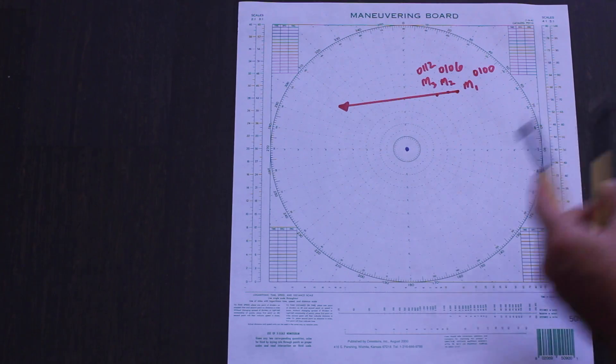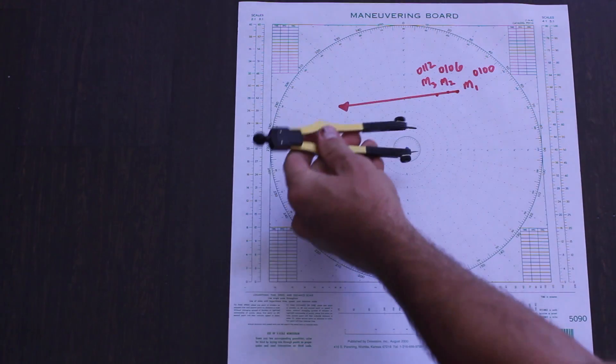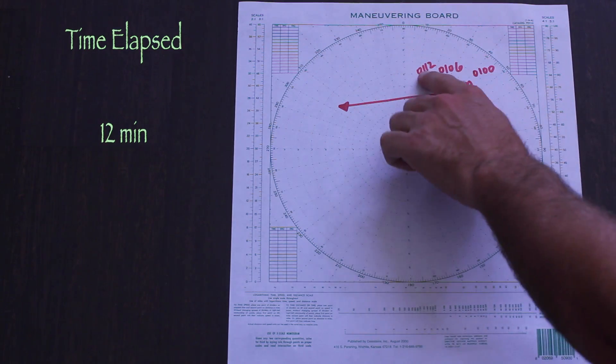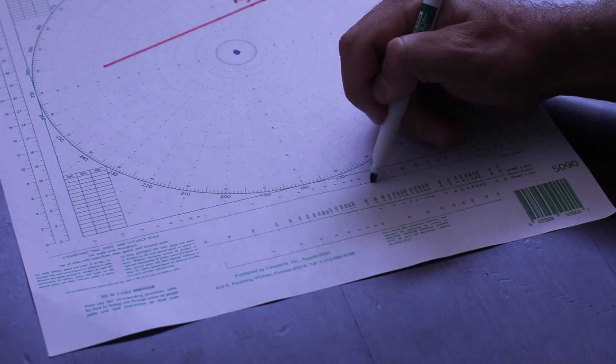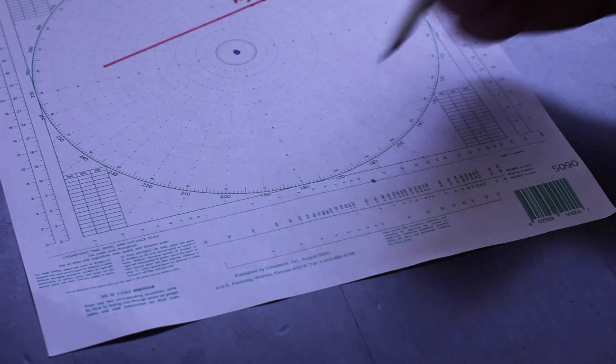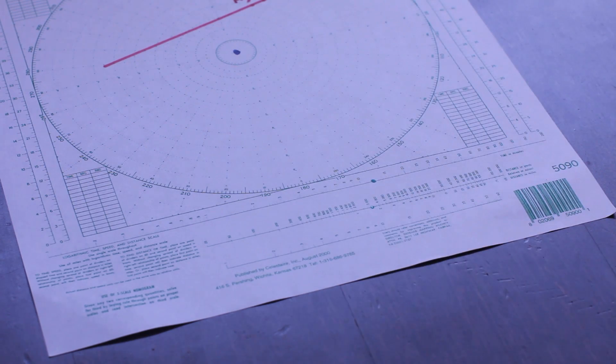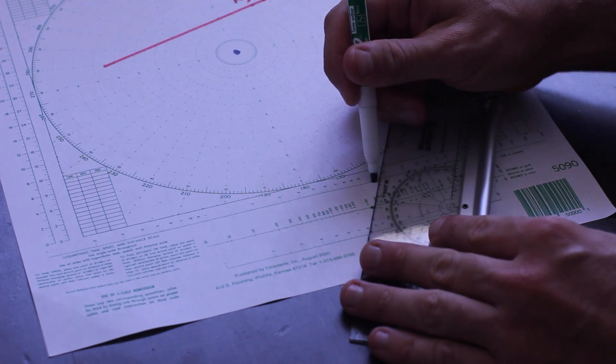What about our other contact from last episode? Let's figure out its speed of relative motion using the same technique we just learned. By noting the distance the radar contact traveled in a given time period we obtain a SRM, or speed of relative motion, of 8 knots. Good to know.